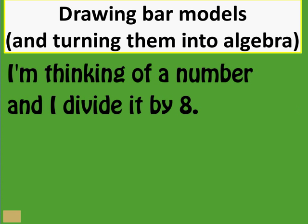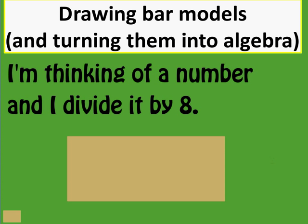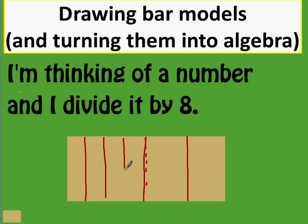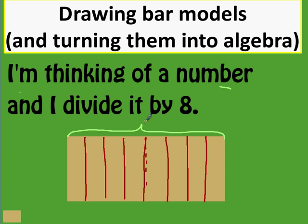Next: I'm thinking of a number and I divide it by 8. This rectangle represents the number I'm thinking of. To divide by 8, I divide by 2, then divide each half by 2 to get quarters, and then divide each quarter by 2 — cutting it into eighths. The whole rectangle is the number I'm thinking of, which I'll call B, and it's been divided into 8 equal parts.